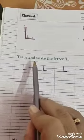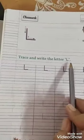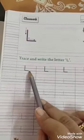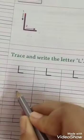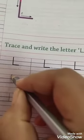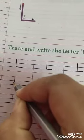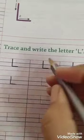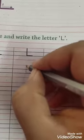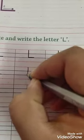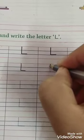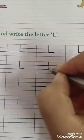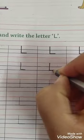Now trace and write the letter L. How to write L? L kaise likhna hai? First start with red line. Red line to blue line. Like standing line and sleeping line. First you have to start red line to blue line. Standing line and small sleeping line. Red line to blue line and small sleeping line.